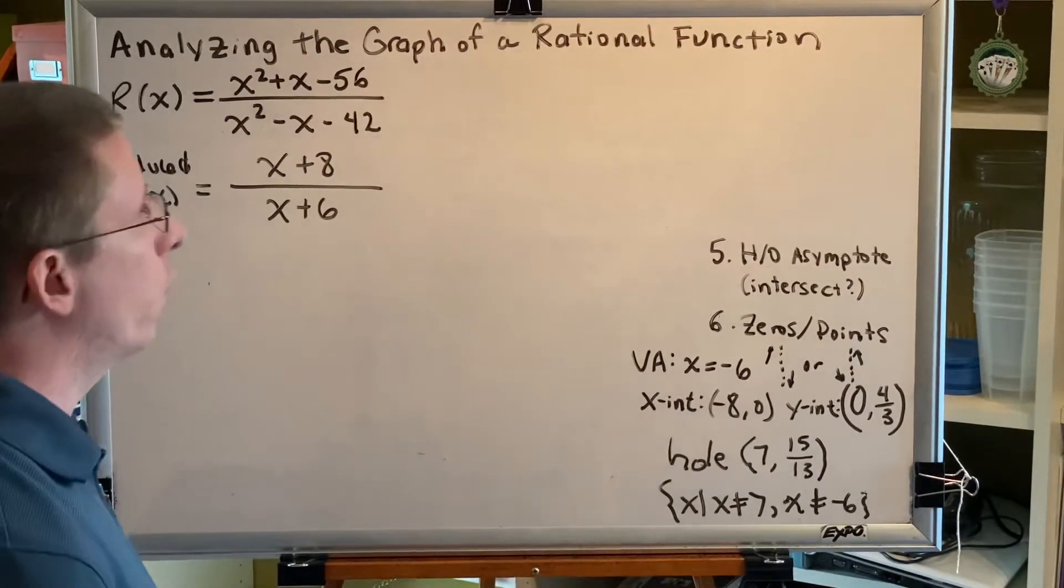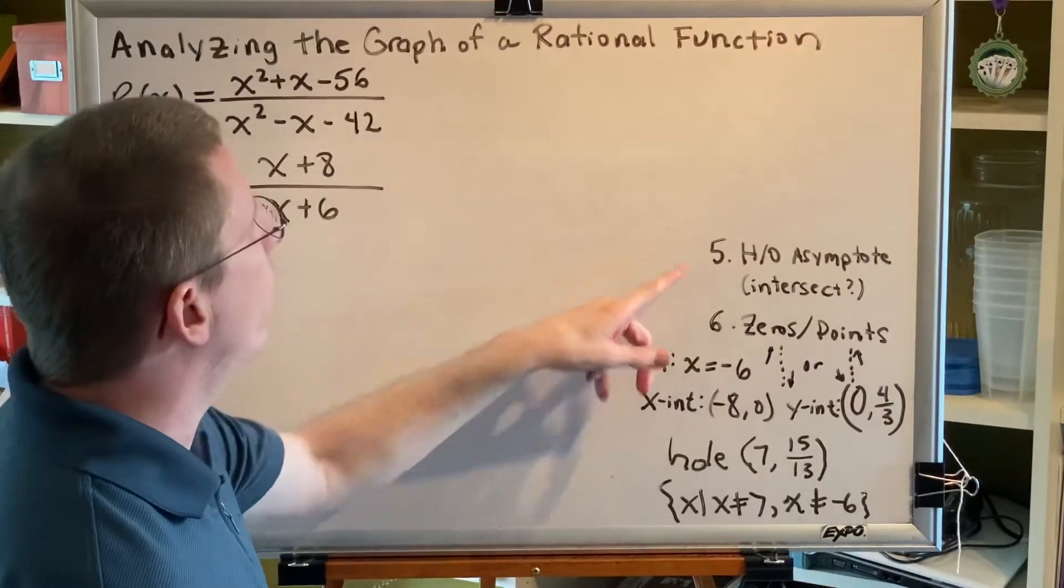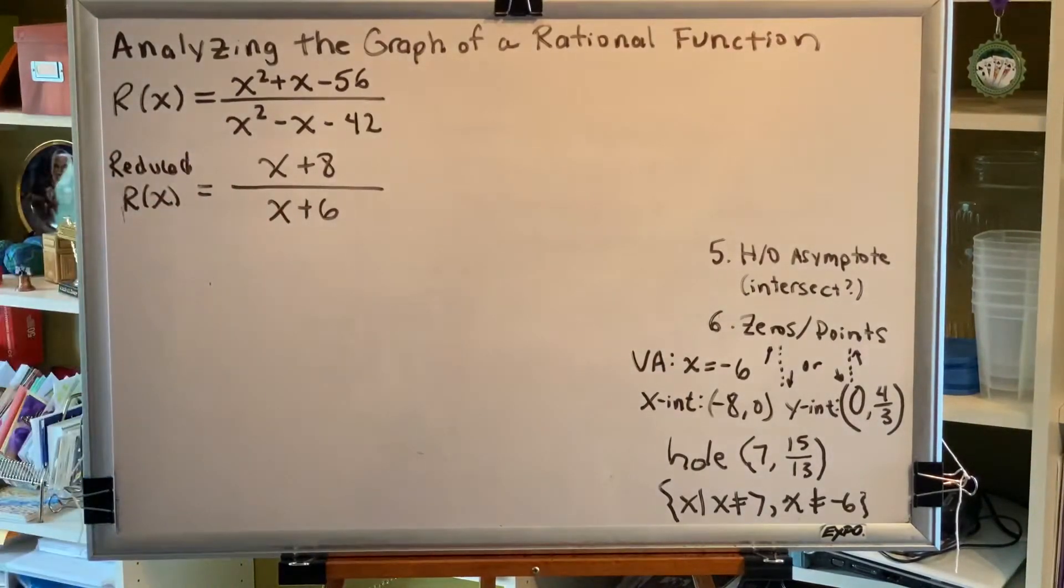We've performed steps 1, 2, 3, and 4. We're ready to move on now to step 5, looking for the horizontal or oblique asymptote.